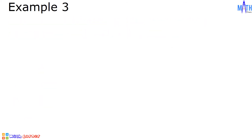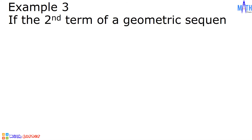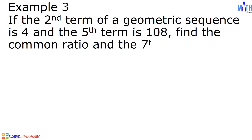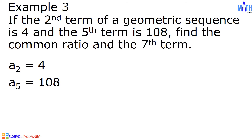Last example, example number 3: If the second term of a geometric sequence is 4 and the fifth term is 108, find the common ratio and the 7th term. The given values: a sub 2 is equal to 4, a sub 5 is equal to 108, and we need to find the common ratio and the 7th term.